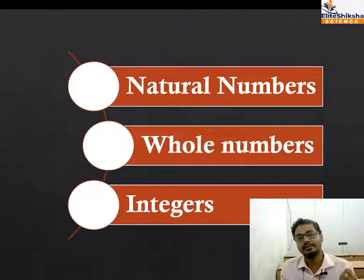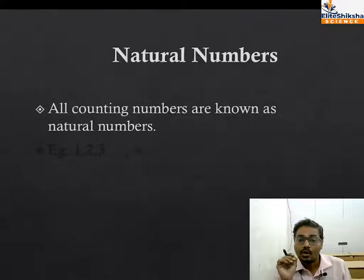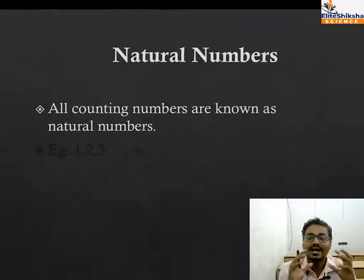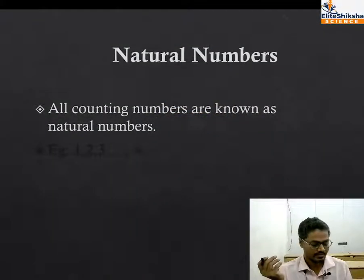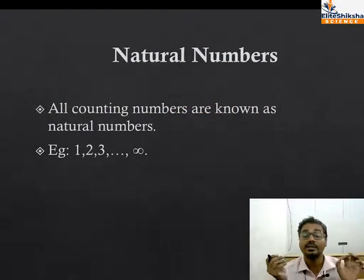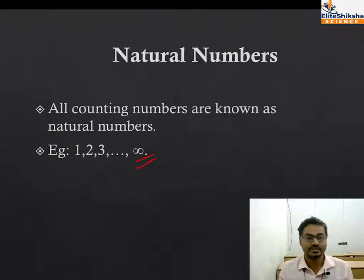Let's talk about natural numbers. What are natural numbers? All counting numbers are known as natural numbers. In daily life, one, two, three, four, five - the numbers you count with, those are all natural numbers. These counting numbers go till infinity. From one, two, three to infinity, all are your natural numbers.